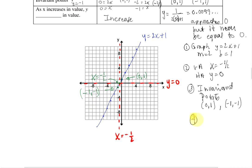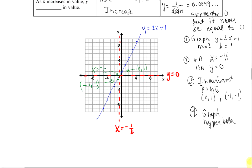The fourth step is to graph the hyperbola. Remember that the reciprocal of a linear function gives us a hyperbola. We want to be sure that we glide along our vertical and horizontal asymptotes. Using green, we come along from the top, glide along, go through our invariant point, and glide along the horizontal asymptote. Then over in the third quadrant, we glide along the horizontal asymptote, go through our invariant point, and glide along the vertical asymptote.